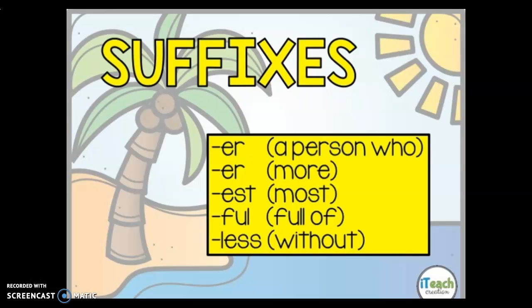The next suffix we are going to go over is '-est,' which means 'most.' If we were to add '-est' to our root word 'tall' to get 'tallest,' that would mean most tall. So if we were to say, 'Boys and girls, line up from shortest to tallest,' that would mean you are lining up from the most short to the person who is the most tall.